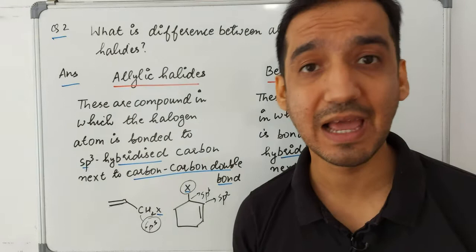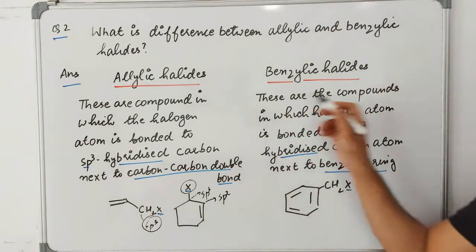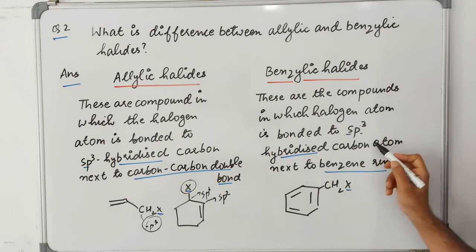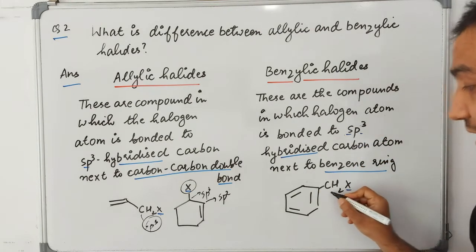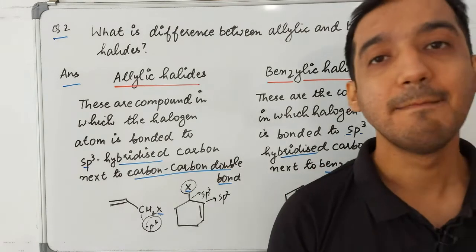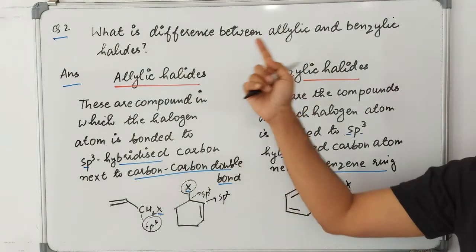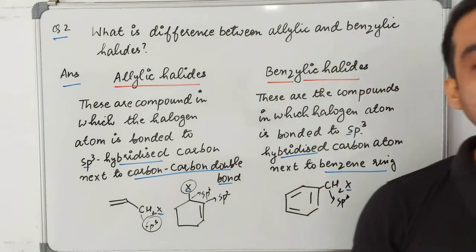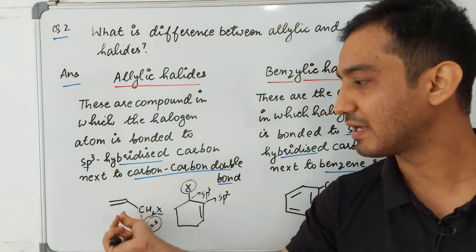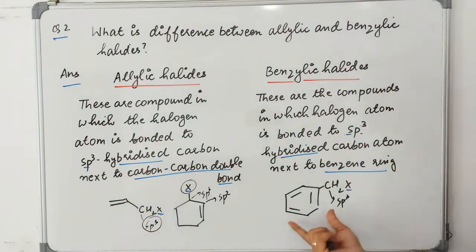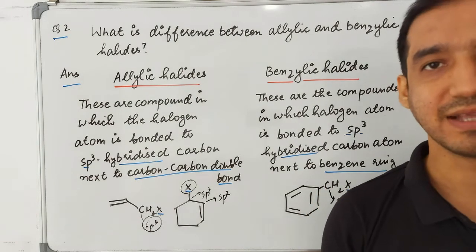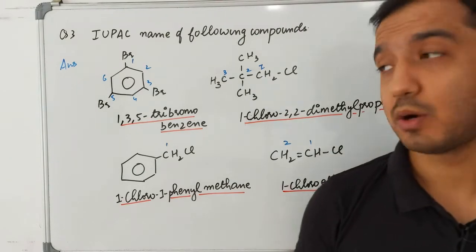Similarly, in benzylic halides, the halogen atom is bonded to an sp3 hybridized carbon atom next to a benzene ring. So the halogen is attached to a carbon (sp3) which is attached to the benzene ring. In allylic halides there is a double bond carbon attached to the carbon bearing the halogen, and in benzylic halides benzene is attached to that carbon.